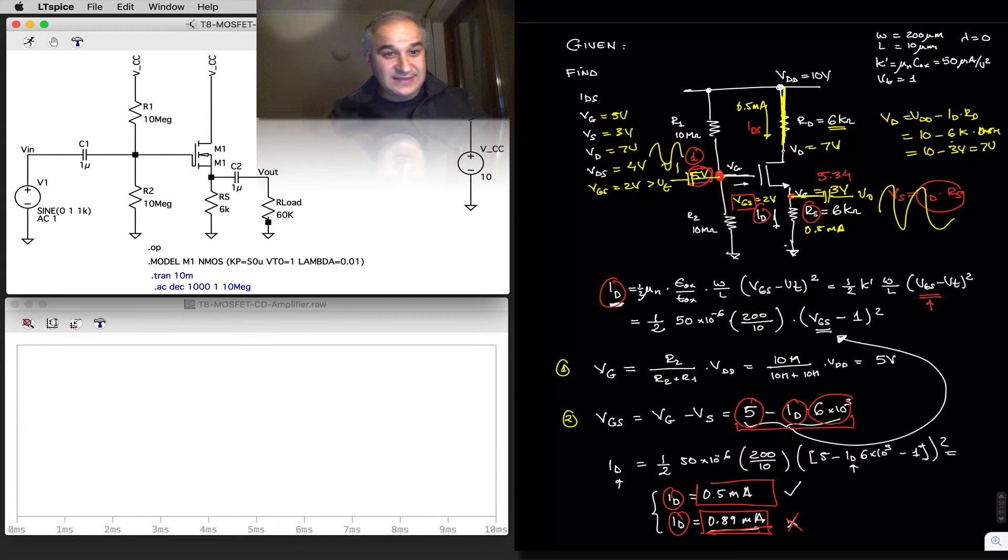They are in phase, the gain is approximately equal to 1, and we can use this as an output stage in discrete MOSFET transistor applications, because as we saw in the previous video, the common source amplifier has a high output impedance, which we want to lower.